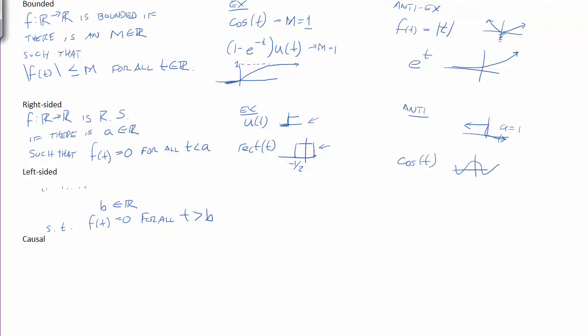Examples of left-sided signals include rect again. Rect is both left and right-sided. And u of minus t. So this is our flipped around step function. And it is left-sided because it's inactive to the right of 0. And then anti-examples would be regular old u of t and, of course, cosine of t.